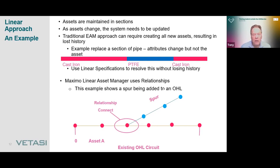Another example is relationships. We've got a circuit going from A to B with 100 poles. At pole number 33, we decide to add a spur to a house. We maintain the original asset, put in the new spur, and then create a relationship showing that the new spur connects to the original asset at pole number 35.